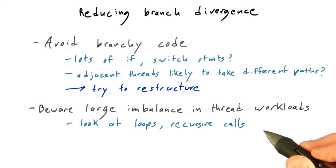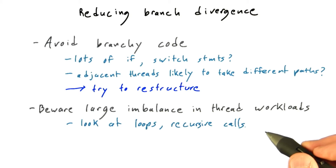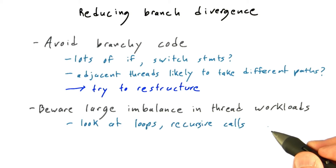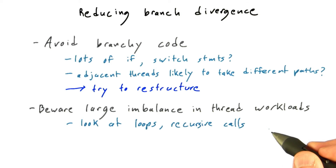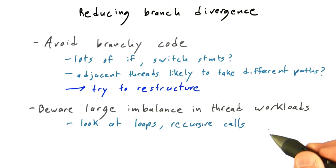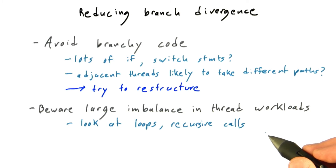In the next unit, you'll see another example — breadth-first search in a graph — where each thread is assigned a work item of random size. And if one thread gets unlucky and picks up a work item that takes a thousand times longer than the rest of the threads, you're wasting a lot of computational horsepower as all the rest of those threads sit idle waiting for that long-running thread to finish.